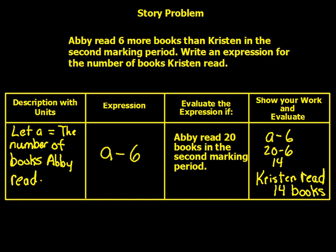Abby read six more books than Kristen in the second marking period. Write an expression for the number of books Kristen read. Let A equal the number of books Abby read. We do A minus 6, because Kristen read six less. With Abby reading twenty books: A minus 6 equals twenty minus 6 equals fourteen. Kristen read fourteen books.